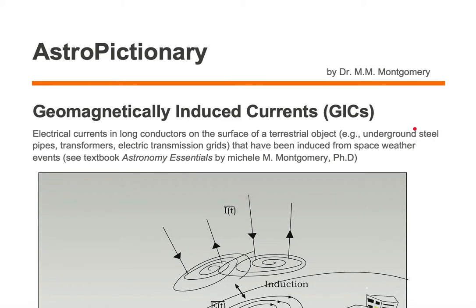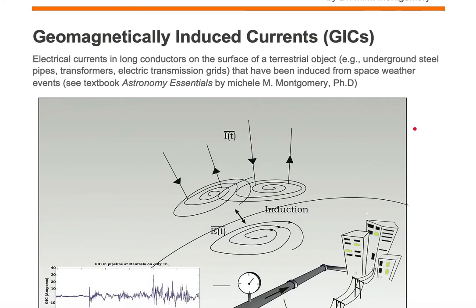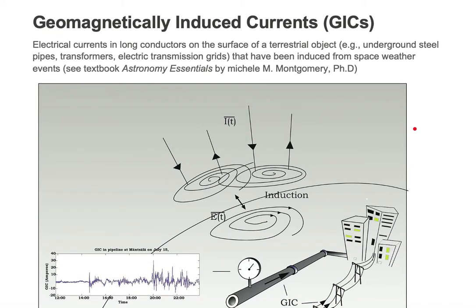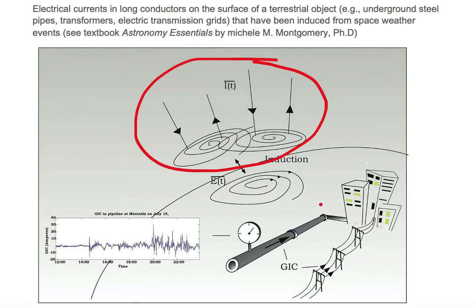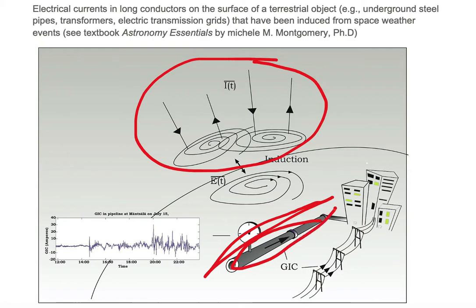A space weather event occurs and we have variations in the ionospheric currents. These variations induce currents on the surface of a terrestrial object, such as in long pipelines or transmission lines, for example.